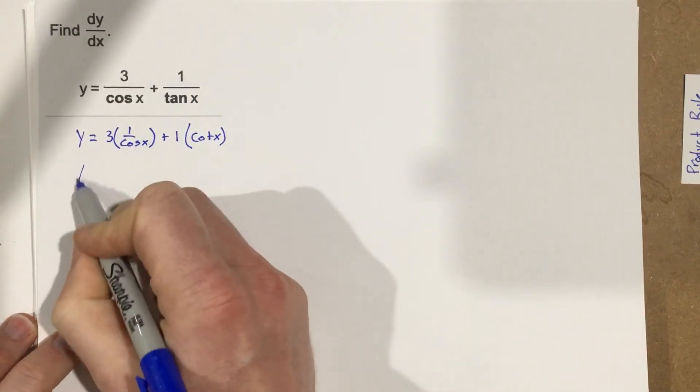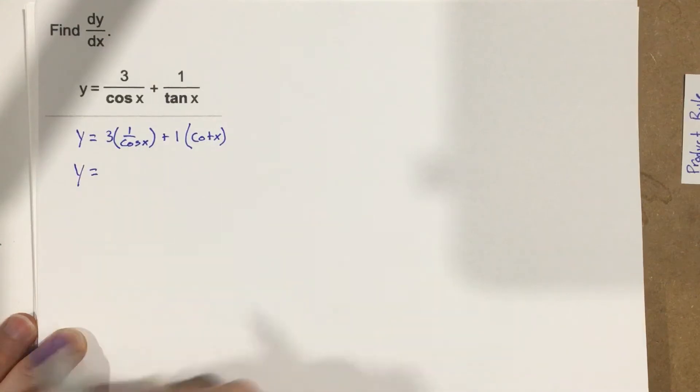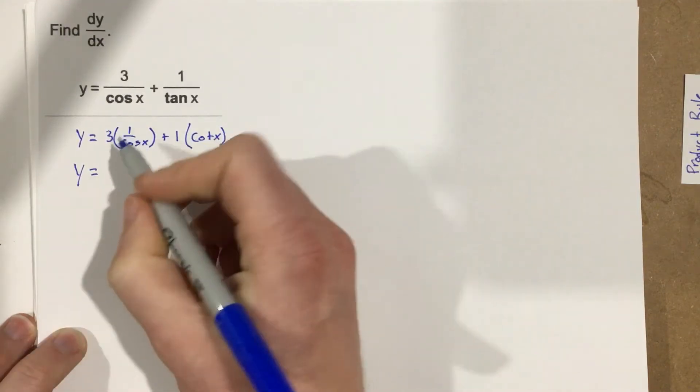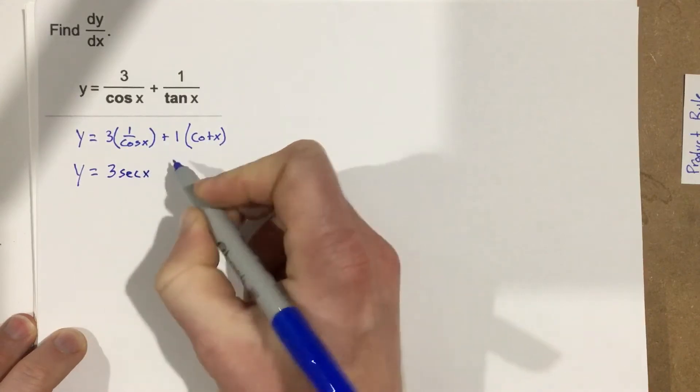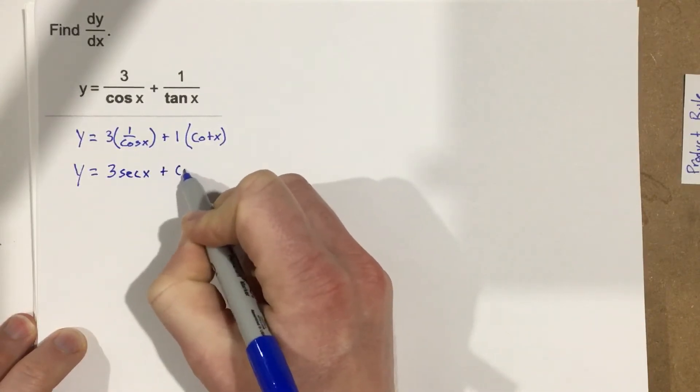This one, then, I can rewrite this 1 over cosine x. We know that that is secant x. So, we can say that this is 3 secant x plus cotangent x.